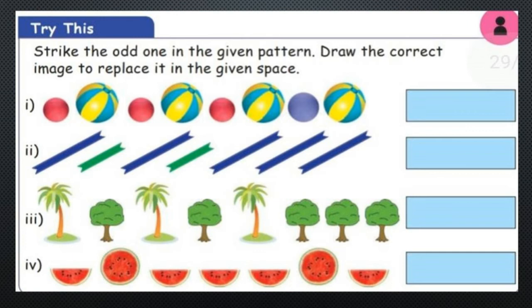Strike out the odd one in the given pattern and draw the correct image to replace it. First: small ball, big ball, small ball, big ball, small ball, big ball — the fourth pattern is wrong, so strike it out and draw small and big ball. Second: long and short ribbon — blue, green, blue, green. The third one is wrong, so strike out the blue ribbon and draw the green ribbon. Third: coconut tree, mango tree, coconut tree, mango tree, coconut tree, mango tree — another mango tree appears, so strike it out and draw the coconut tree. Fourth: watermelon pattern — a full size watermelon should come next, so strike out the wrong one and draw the full size watermelon.